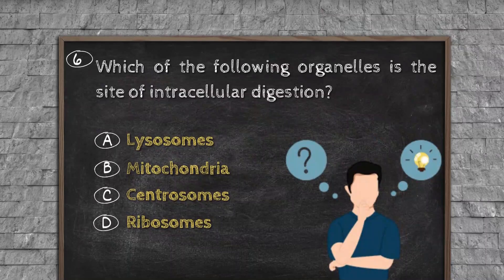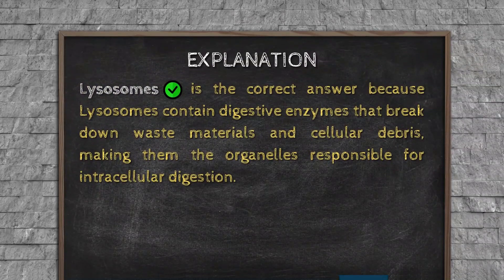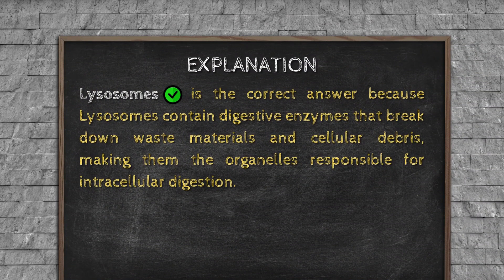Question number six. Which of the following organelles is the site of intracellular digestion? Option A, Lysosomes. Option B, Mitochondria. Option C, Centrosomes. Option D, Ribosomes. Explanation: Lysosomes is the correct answer because lysosomes contain digestive enzymes that break down waste materials and cellular debris, making them the organelles responsible for intracellular digestion.